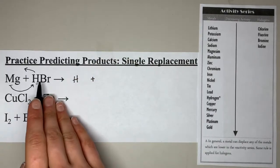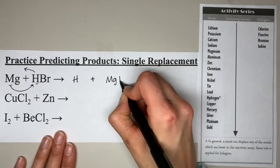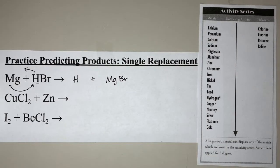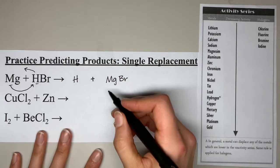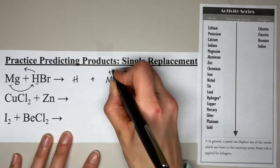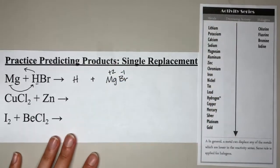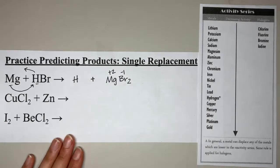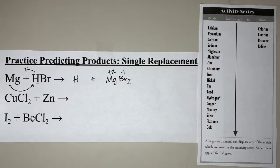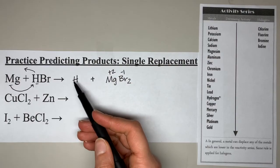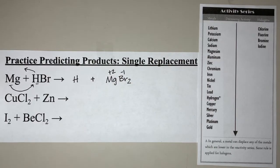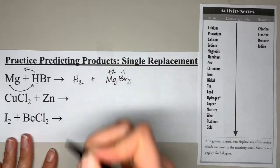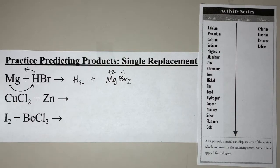Now the magnesium is bonding to the bromine. We made a new compound, so we need to crisscross. Magnesium is a +2 charge and bromine is −1. Crisscrossing: the 2 comes down as a subscript by the bromine, giving us MgBr₂. Hydrogen is one of the diatomic elements, so you need to put a subscript 2 there, giving H₂. We would then balance, but we're just predicting products.